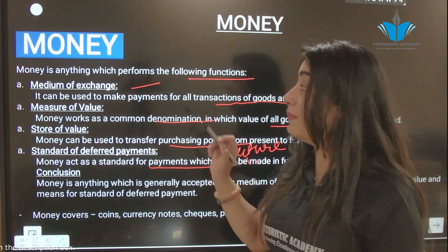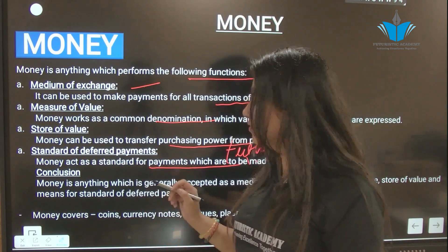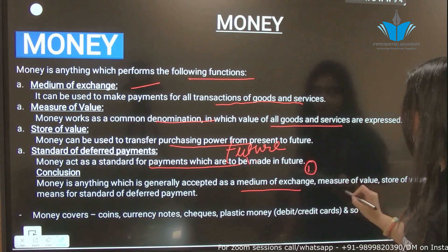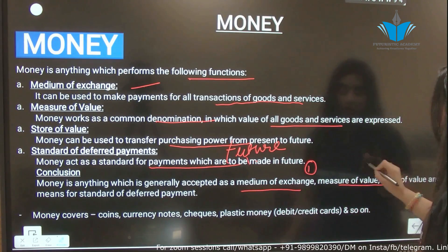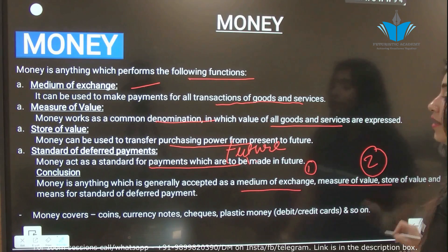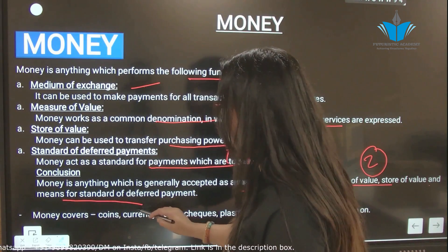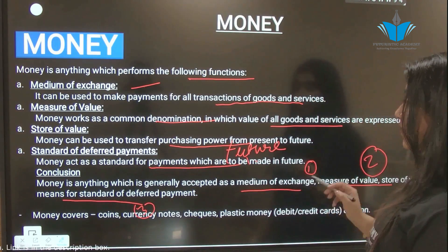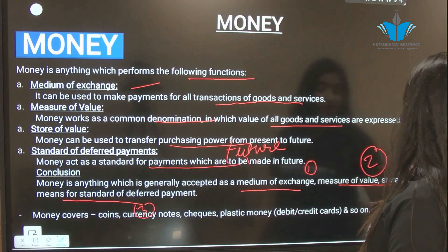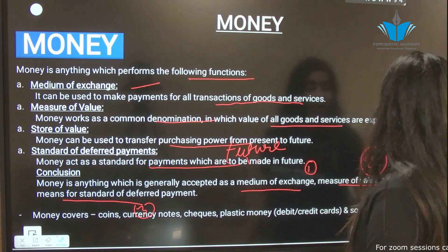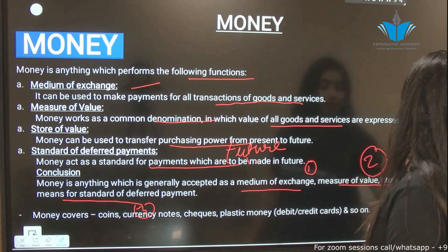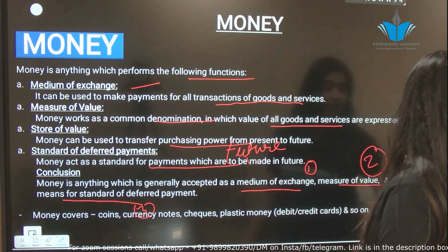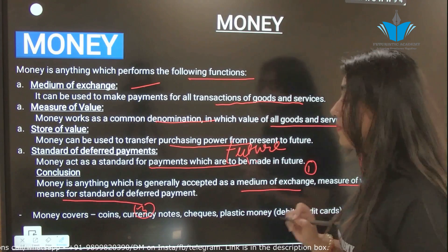So in conclusion, money is anything which performs all these functions: first, generally accepted as a medium of exchange; second, measure of value; third, standard of deferred payment; and fourth, store of value. Whatever fulfills all four of these functions is known as money.